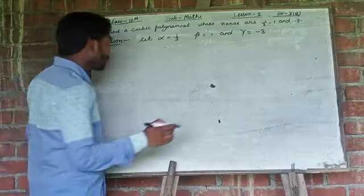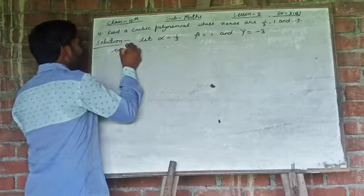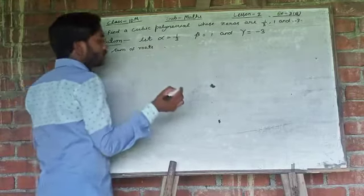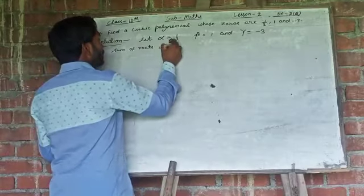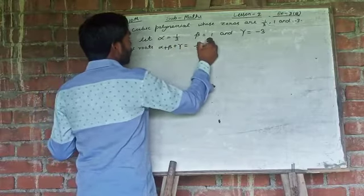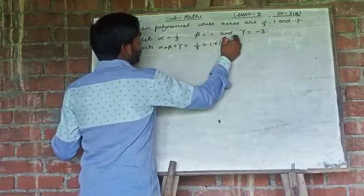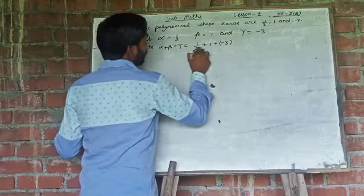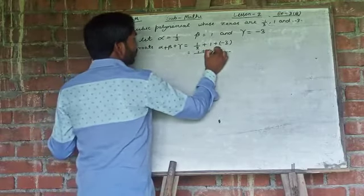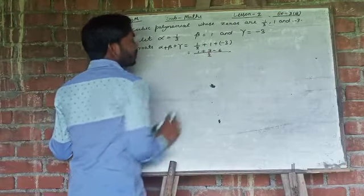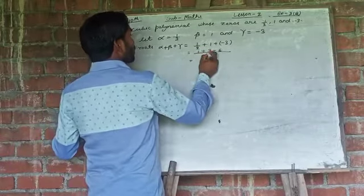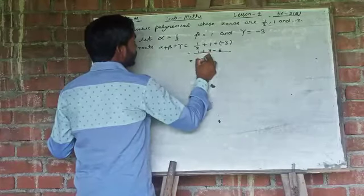First of all, sum of zeros, alpha plus beta plus gamma is equal to 1 by 2 plus 1 plus minus 3. Then LCM will be 2. So here it will be 1, here 2 and this one will be minus 6. From here, 2 on 3, 6 minus 3, so it will be minus 3 by 2.